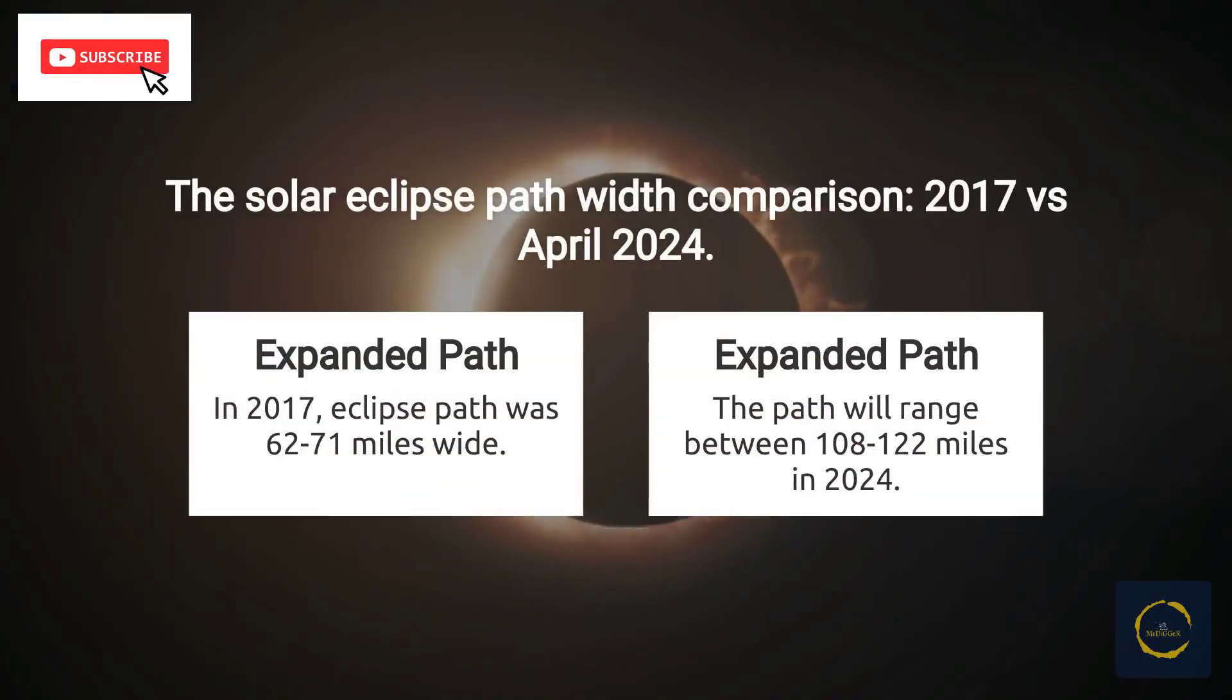In 2017, the path ranged from about 62 to 71 miles wide, while during the April eclipse, the path over North America will range between 108 and 122 miles wide, meaning at any given moment, this eclipse covers more ground.